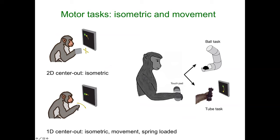We ourselves investigated what happens in a more complex animal doing reaching movements — a center-out task in two dimensions, including isometric versions where the subject only exerts a force in one or two dimensions, and more complex tasks like tube-and-ball manipulation or force production of a particular intensity. The question: can we find a manifold in primary motor cortex for each task, and do similar tasks have similar manifolds?